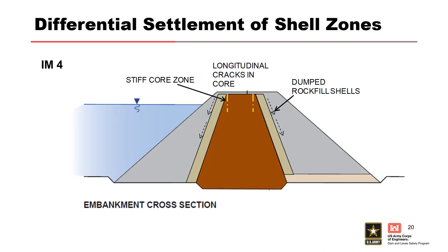For IM4, more compressible outer shell zones can cause a down-drag effect on a stiff core zone, which can induce longitudinal cracking in the core. Longitudinal cracking can change to transverse cracking on the abutments. In addition, longitudinal cracks on both shoulders may intersect to provide a zone of transverse cracking from upstream to downstream across the core.